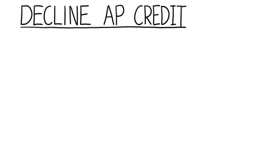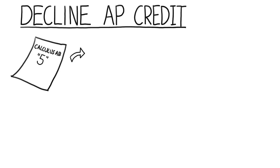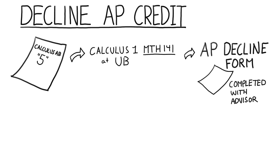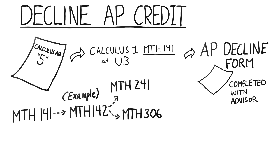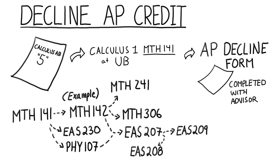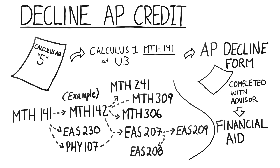You can also decline AP credit. So if you receive a 4 or 5 in AB Calculus and wanted to still take Calculus 1 anyway, you can decline the AP credit by completing a form. It's actually encouraged to consider declining AP credit for AB Calculus, as launching directly into Calculus 2 — even with a 4 or 5 on the AP exam — can be challenging. Having a very strong and confident foundation in introductory calculus is essential for all the additional math and related classes to come. If you choose to take a UB class equal to AP credit, completing the declination form is important for financial aid reasons, so it's not considered a repeated class.